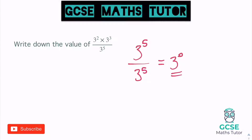Now three to the power of zero is a special one. When we've got something to the power of zero, we've got a number on the top being divided by the same number on the bottom. And what happens when you divide any number by itself? Let's just think of an easy number — just three on its own. Three divided by three gives us the answer one. Anything divided by itself equals one.